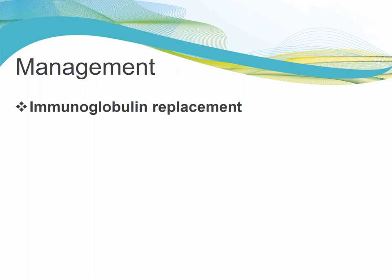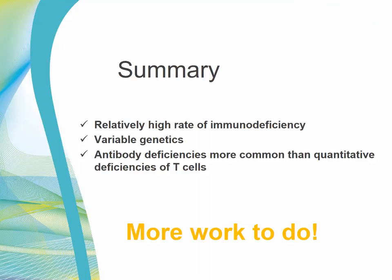So how does this help us? We do treat these patients with immunoglobulin replacement, and I have several patients that we have started immunoglobulin with improvement in their infection profile. So we think there's a clinical benefit in identifying these patients. But I think it also speaks to the role of the mitochondria in the B-cell, which has really been understudied. To sum up: there's a relatively high rate of immunodeficiency in this cohort. The genetics are variable. And quite surprisingly, antibody deficiencies are more common than quantitative deficiencies of T-cells. Definitely more work to do.